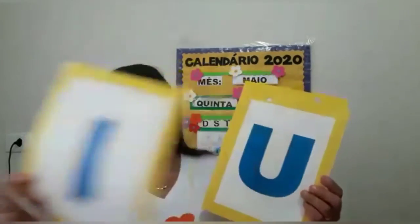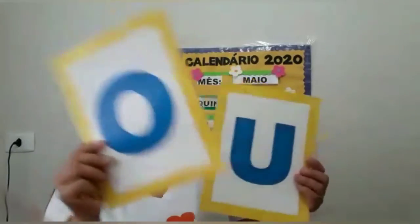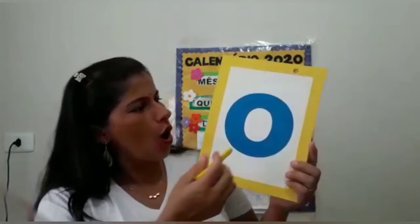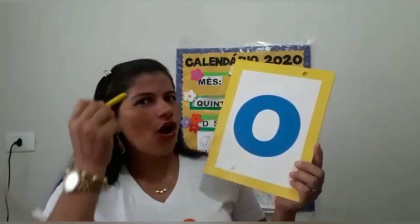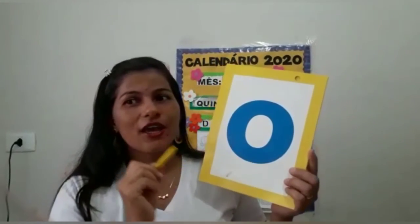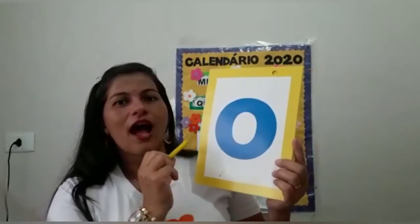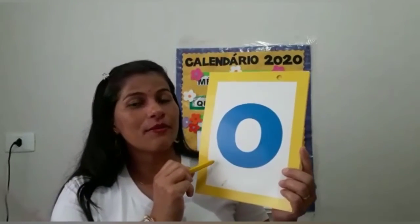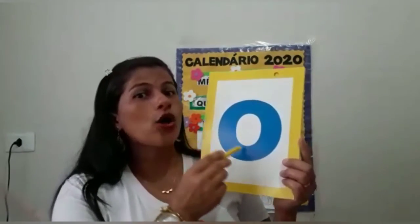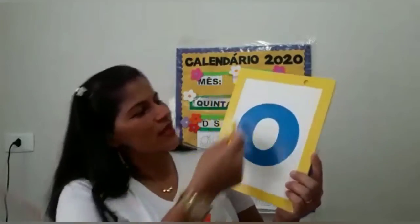E também a vogal O — com ela existem muitas palavras. O de ovelha, O de óculos, O de ovo. E a vogal O também escrevemos nome de pessoas: Oscar, Olinda — nome de pessoa e de cidade.